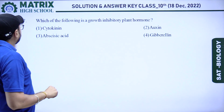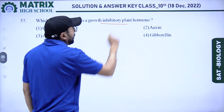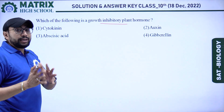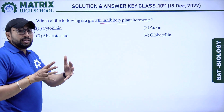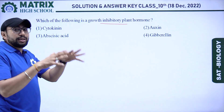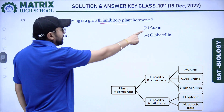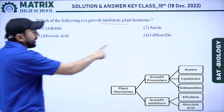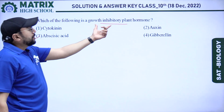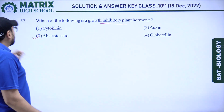Next question: which of the following is a growth inhibitory plant hormone? There are two types of plant hormones — growth hormones and inhibitory hormones that inhibit growth. Options: cytokinin, auxin, abscisic acid, and gibberellin. Abscisic acid is the growth inhibitory plant hormone.